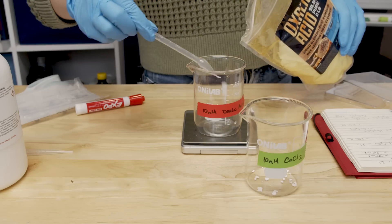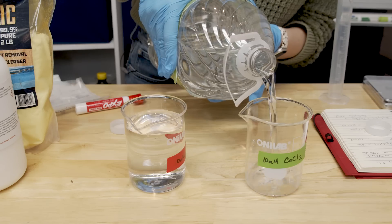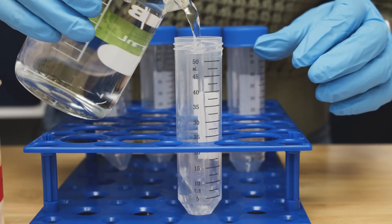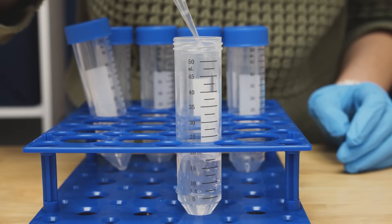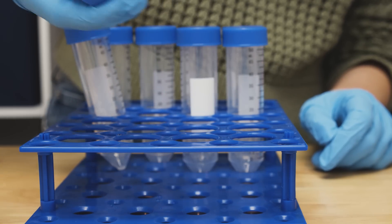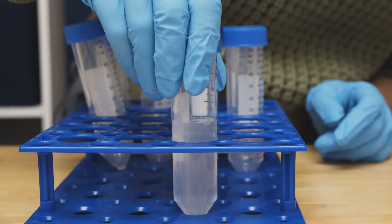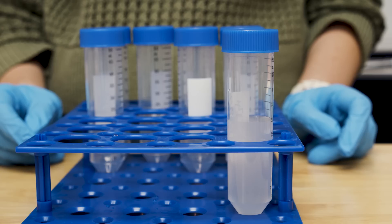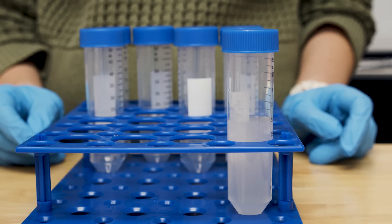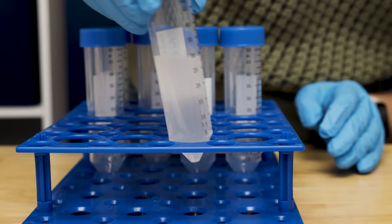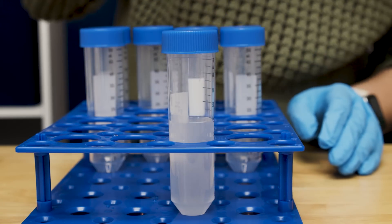So this is called a precipitation reaction. The ions in the solution are so concentrated that when they combine they're no longer soluble. Oxalic acid is a pretty weak acid and it won't totally dissociate in water right away but as the calcium starts precipitating out with the oxalate that's available more of it will dissociate to replace it. Yeah. Oh yeah. That's working. I love it when chemistry works.